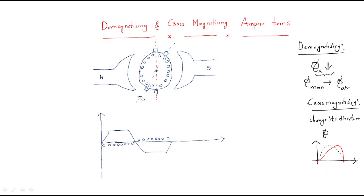Whenever the brushes are shifted, something will happen. Generally, across any north pole we should have some cross conductors, but here the crosses are shifted to this point because the brush is shifted. The triangles and dots shift accordingly. Under the south pole we always have dotted conductors — dot, dot, dot. Also note that the magnetically neutral axis is shifting by angle theta.